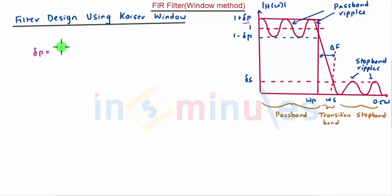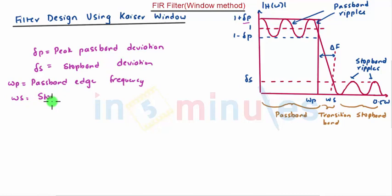Let us define some terms. Here delta P is equal to peak passband deviation. Delta S is stopband deviation. As we know, omega P is passband edge frequency and omega S is stopband edge frequency.